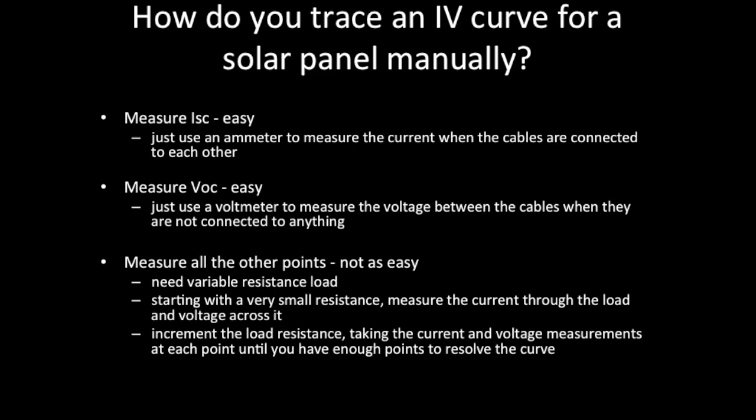Before we talk about the IV Swinger, how do you do this manually? Measuring the short circuit current ISC is easy — just connect the cables together directly and use an ammeter to measure the current. For VOC, the open circuit voltage, that's also easy — just connect a voltmeter across the cables when they're not connected to anything and the reading you get is the VOC.